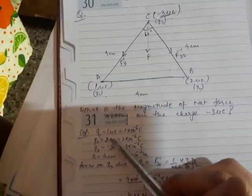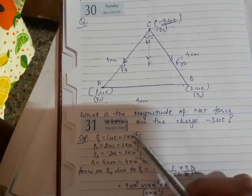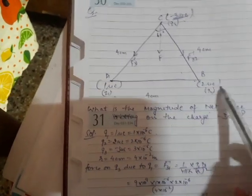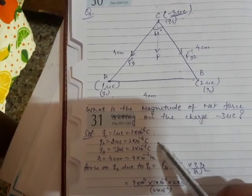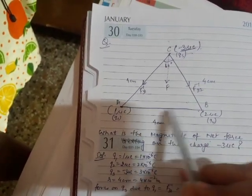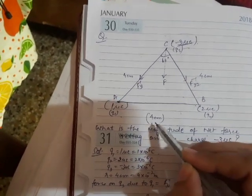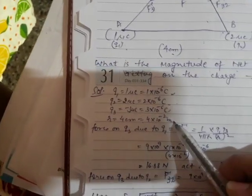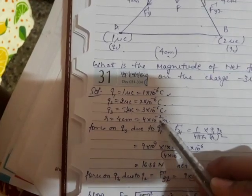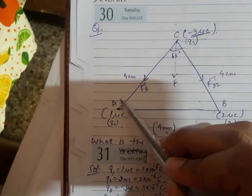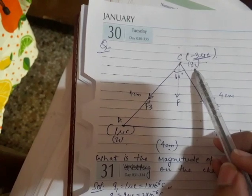The charge at point A is Q1 = 1 micro coulomb, that is 1×10⁻⁶ coulomb. Another charge Q2 at B is 2 micro coulomb, that is 2×10⁻⁶ coulomb. And Q3 at C is minus 3 micro coulomb, that is 3×10⁻⁶ coulomb in magnitude. The side of the equilateral triangle is given to be 4 centimeters, which we convert to 4×10⁻² meters.